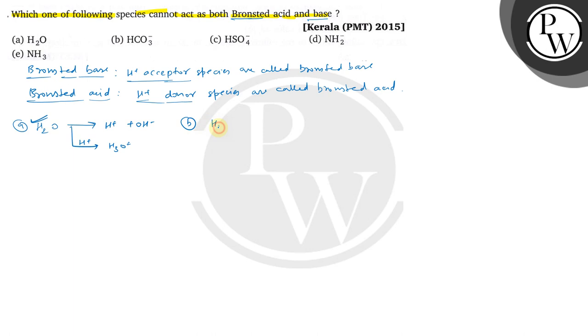Option B is bicarbonate ion, that is HCO3-. It can accept H+ to form H2CO3, that is carbonic acid. And it can lose H+ to produce carbonate ion. This can also behave as both Bronsted acid and base.